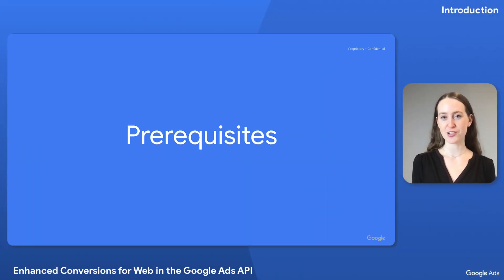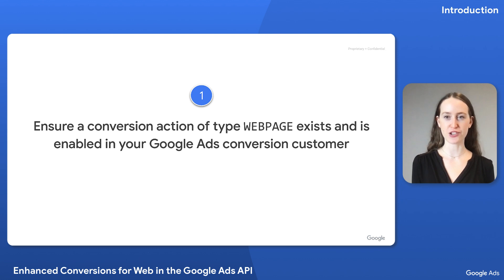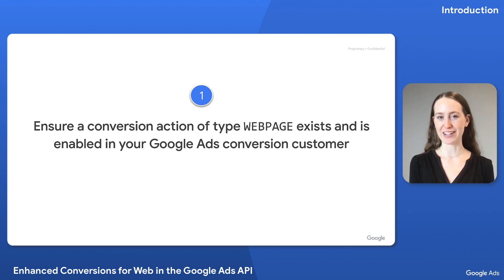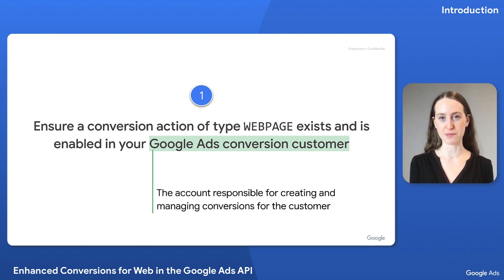Now that we understand the overall flow, let's talk about the prerequisites to making it happen. First, Enhanced Conversions for Web requires making sure a conversion action of type web page exists within your Google Ads conversion customer. Your Google Ads conversion customer is the Google Ads account responsible for creating and managing conversions. It might be a Google Ads client account, or if you're using cross-account conversion tracking, a Google Ads manager account.